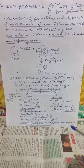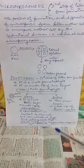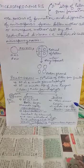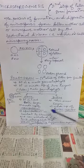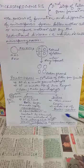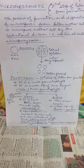Sporopollenin is used to preserve pollen for a long time. The second layer, intine, is a thin inner layer. It is a continuous layer made up of pectin and cellulose.